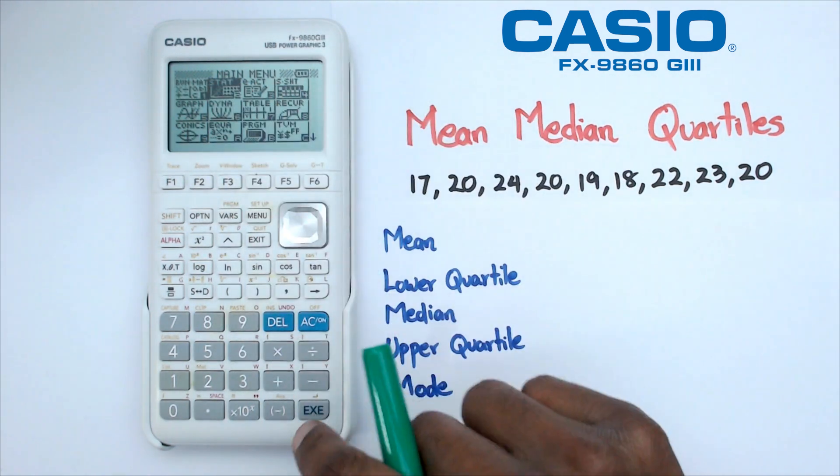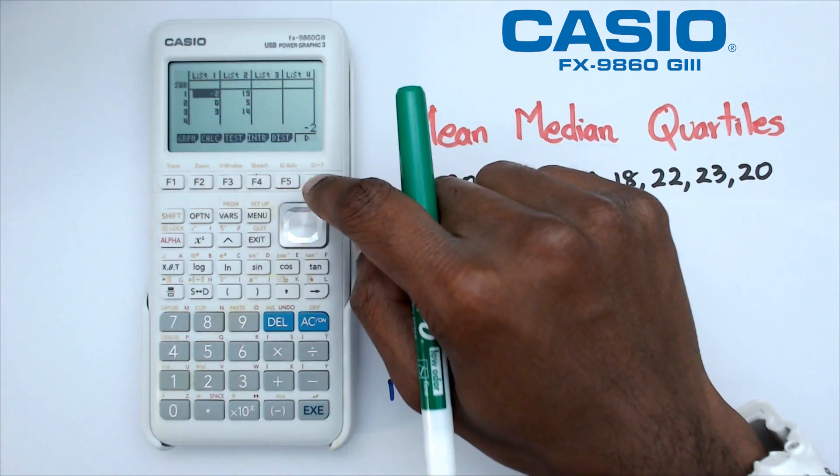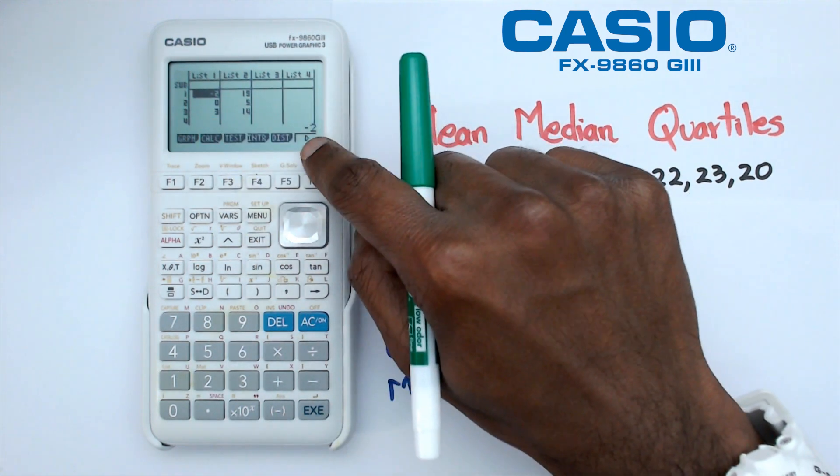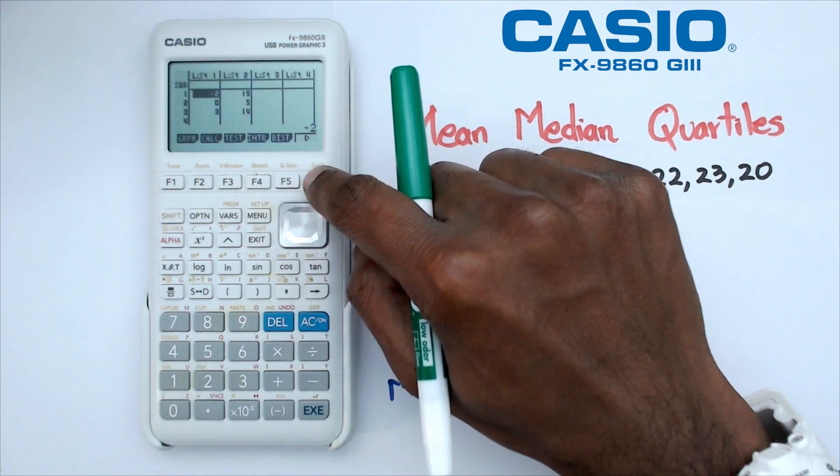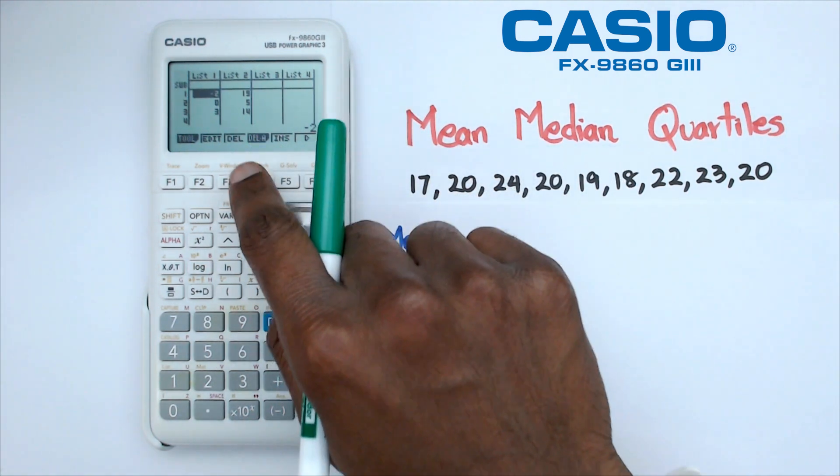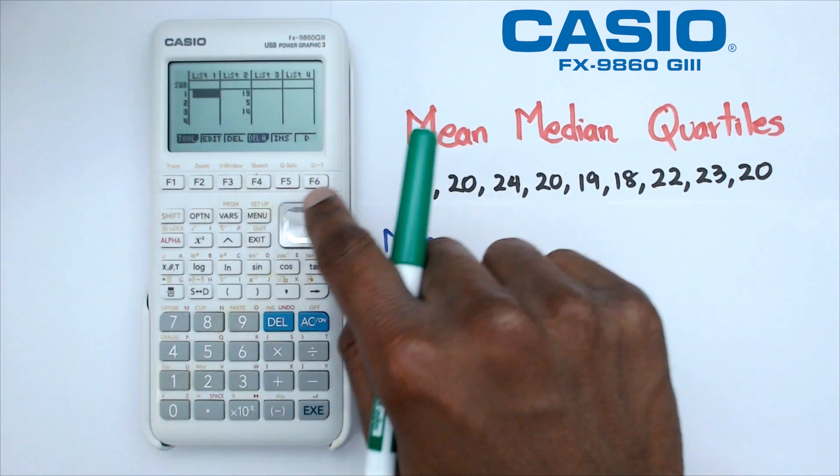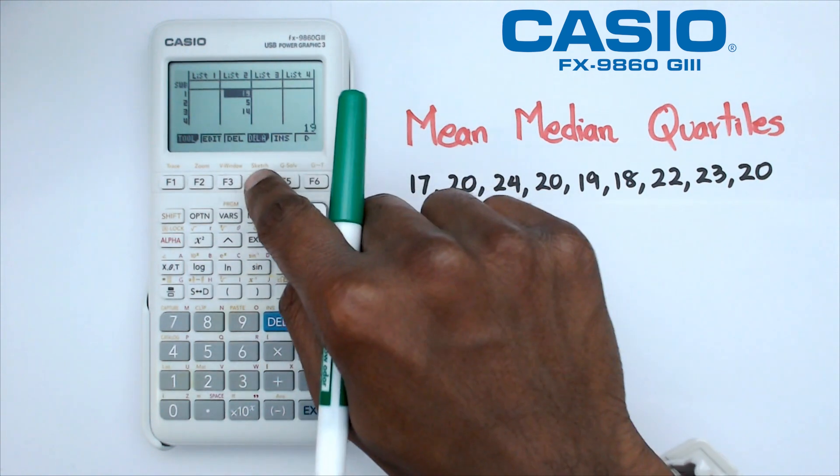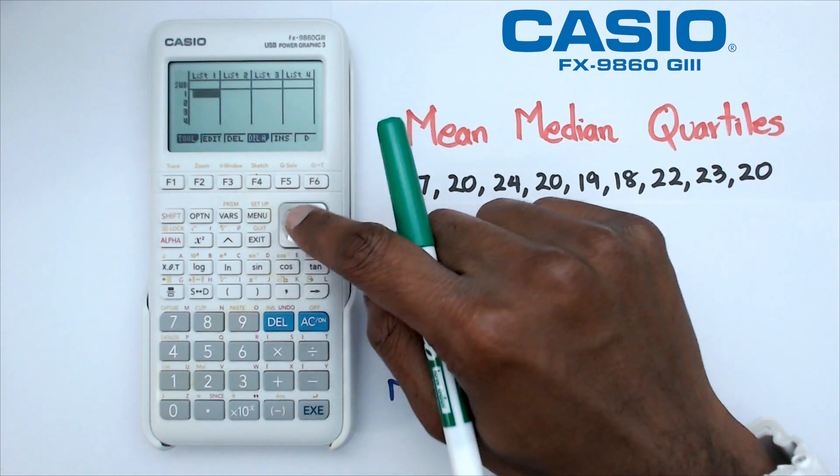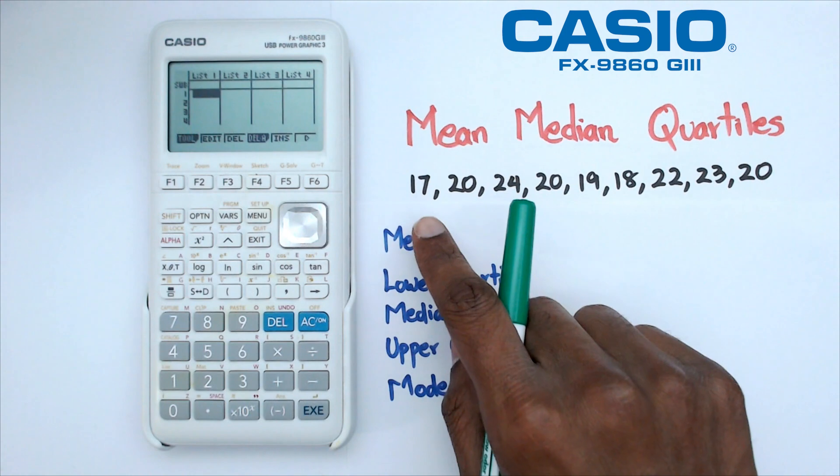Once you're in the stat mode, what's really important is that we want to make sure that these numbers are actually empty or just get rid of those numbers. The way to get rid of those numbers is by clicking on F6, which is the little arrow button, and there's a little delete A button which is F4. So we're going to click on delete A, that deletes the list, we're going to click on F1 and repeat the process for list 2. This is just a quick reminder for how to get rid of all those numbers in one shot.